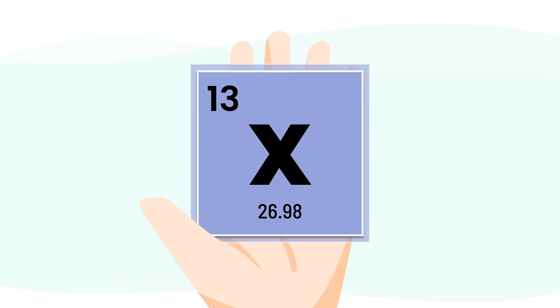Imagine this. You're handed a tiny square with just two numbers on it. Seems simple, right? But this little code holds big secrets. It tells you how heavy an atom is, how it behaves, and what element it is in the first place.